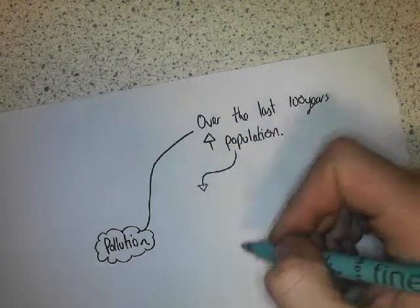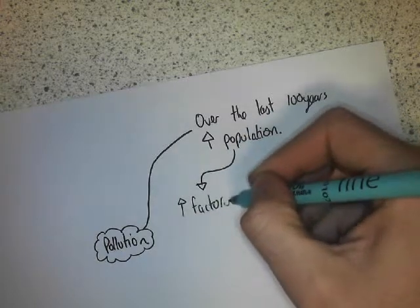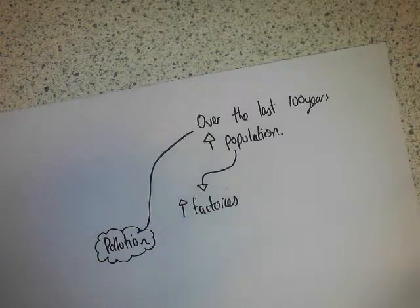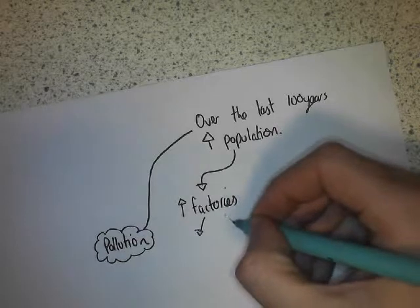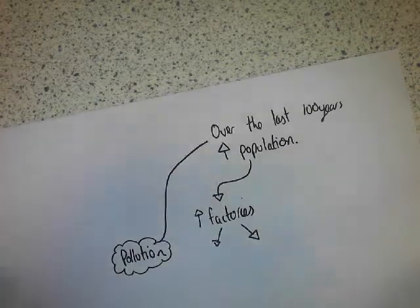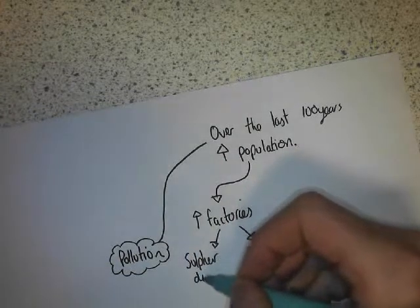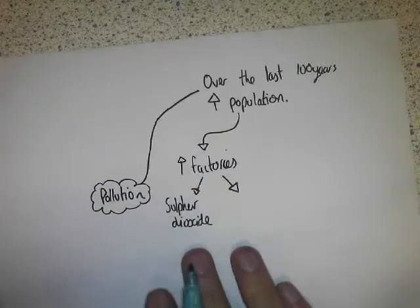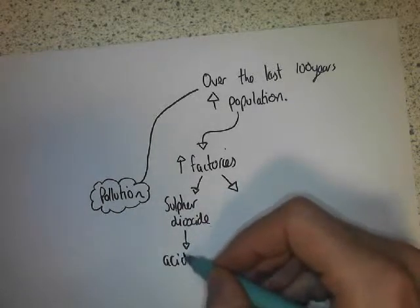Firstly, there's been an increase in factories. The need for energy has increased — we all demand electricity, and that electricity comes from factories. Factories do lots of things to the environment, but the two things you need to know about are: the sulfur dioxide they give off, which causes acid rain.